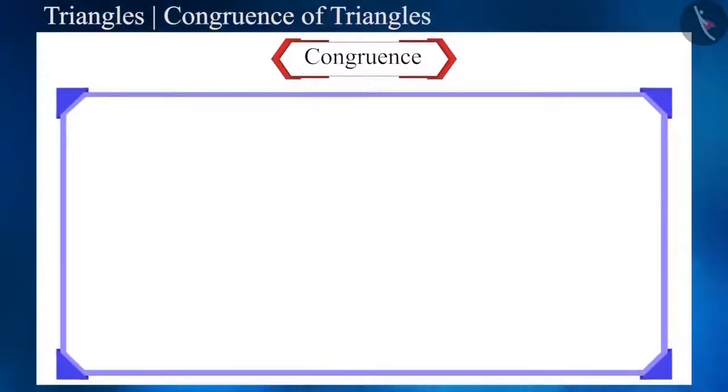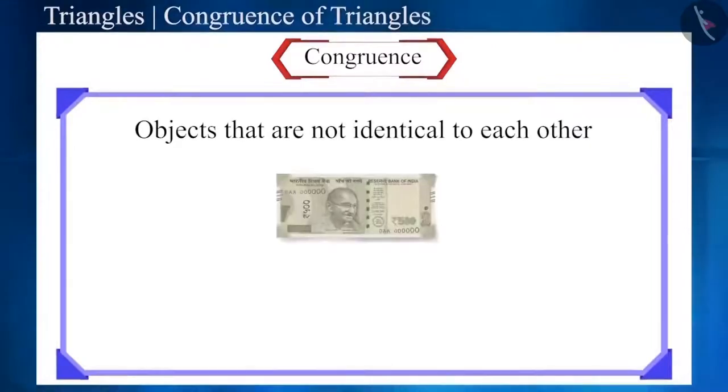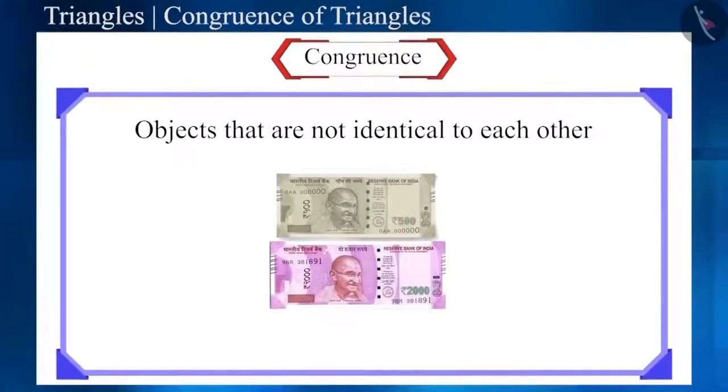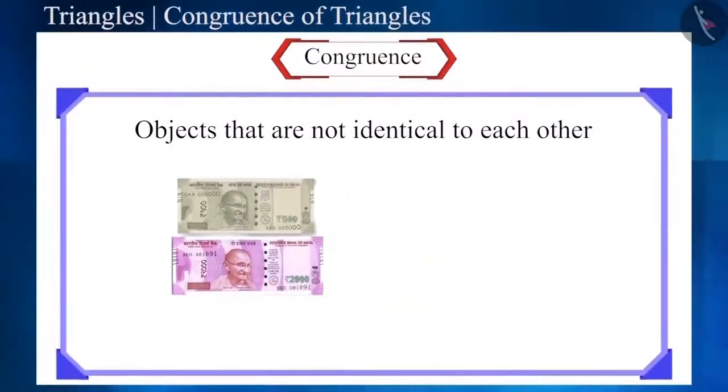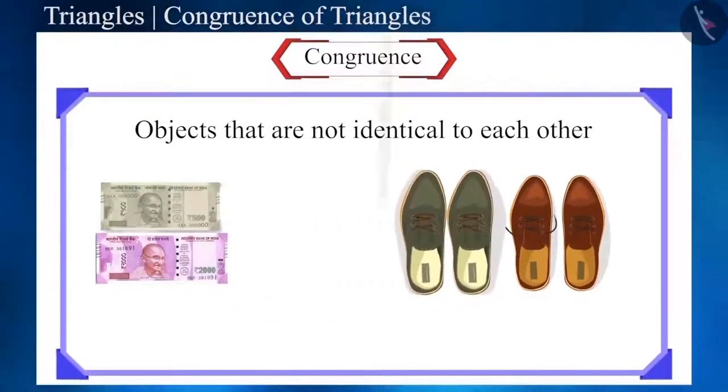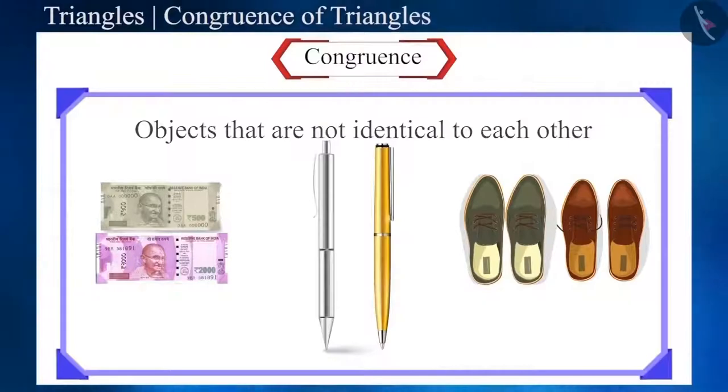And now, here are some objects that are not identical to each other. A 500 rupee note and a 2000 rupee note are not identical to each other. Shoes of different sizes and pens of two different companies, etc.